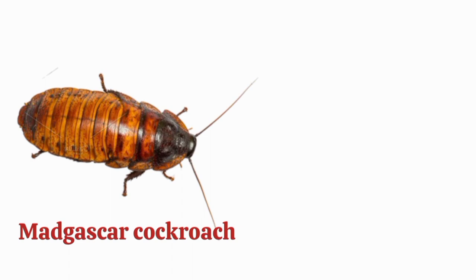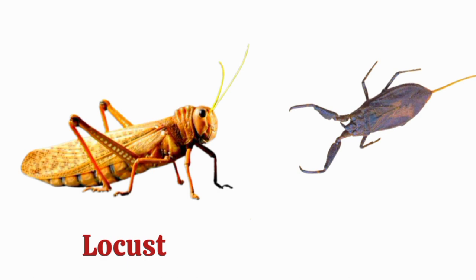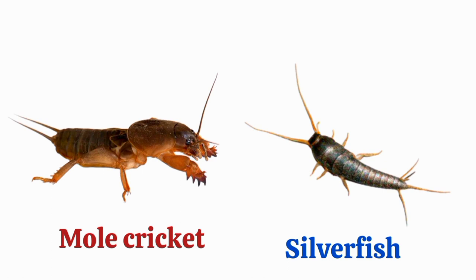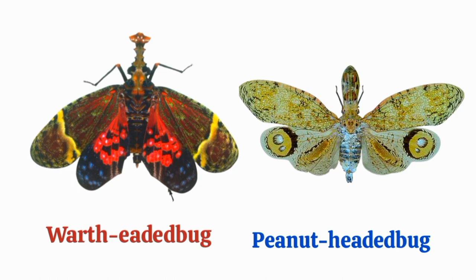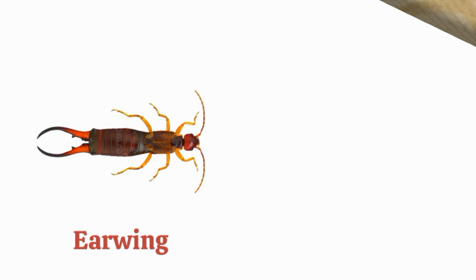Madagascar cockroach, moon moth, water beetle, water scorpion, mole cricket, silverfish, slipper moth, longhorned beetle, water penny bug, peanut-head bug, leafcutter ant, water beetle, shark-eye wing, giant water bug.